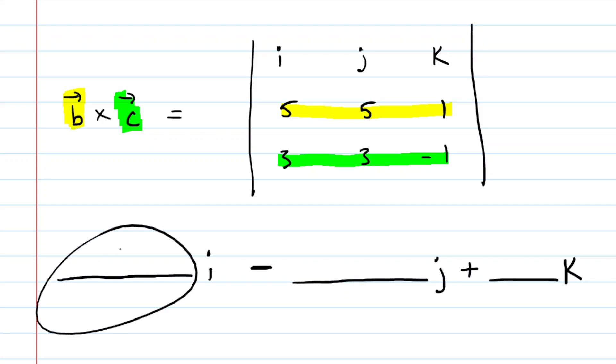Now, to compute this first space here, what I like to do is just encase this in brackets. And then I cover up the first column. So I cover up the i-column, and then I just have a 2 by 2, and it's actually a 2 by 2 determinant. So that just means we have to cross-multiply this way. So 5 times negative 1 is negative 5, and then 3 times 1 is 3. And then we just subtract those results.